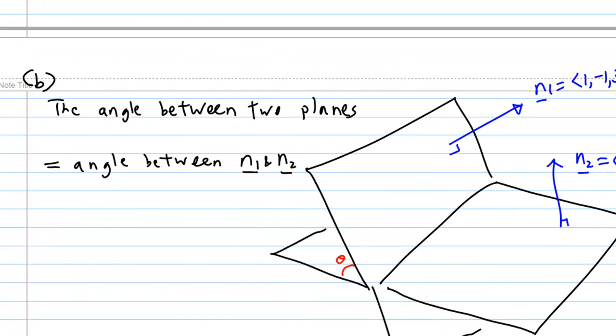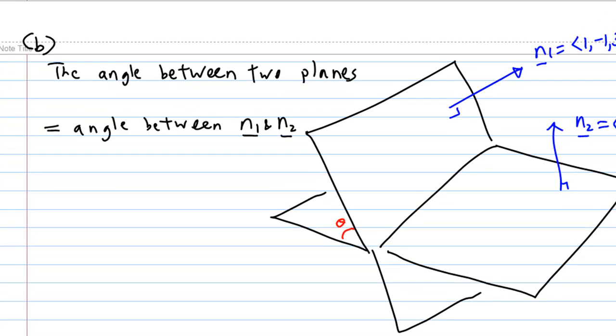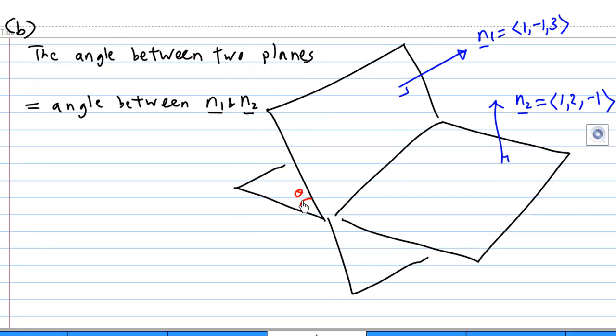Now, how do we find the angle between two planes? Let's say the angle between two planes is theta. This angle between two planes is also the angle between the two normals n1 and n2, where n1 and n2 are perpendicular to the planes.